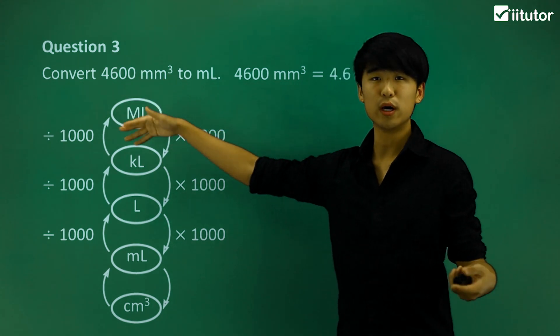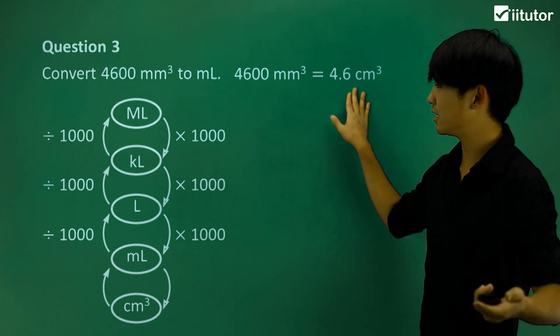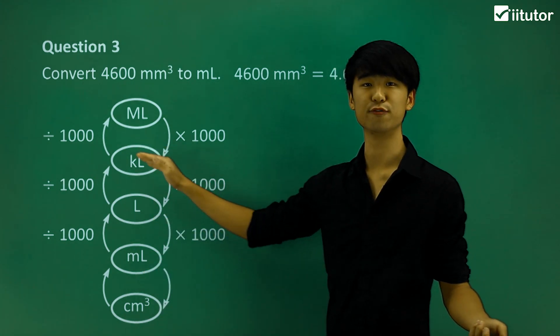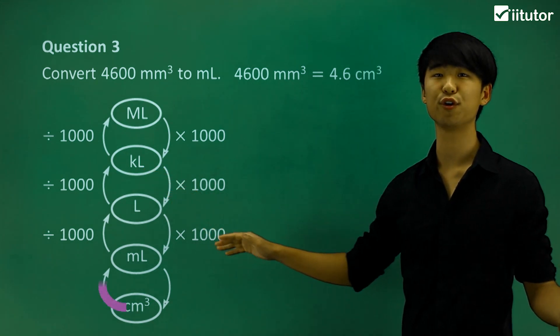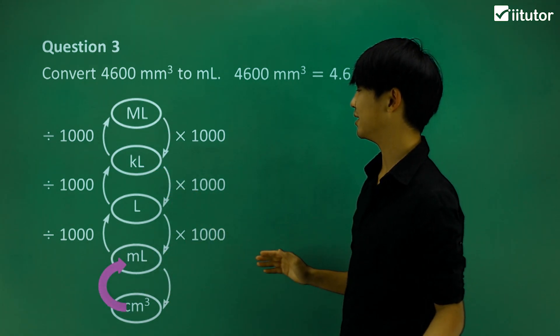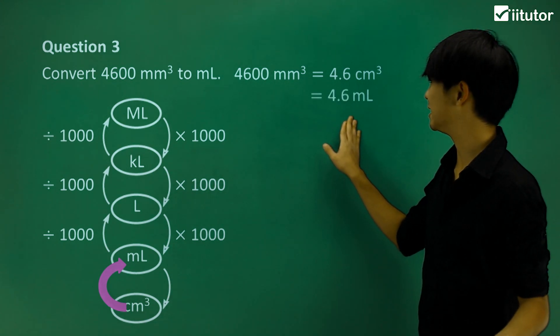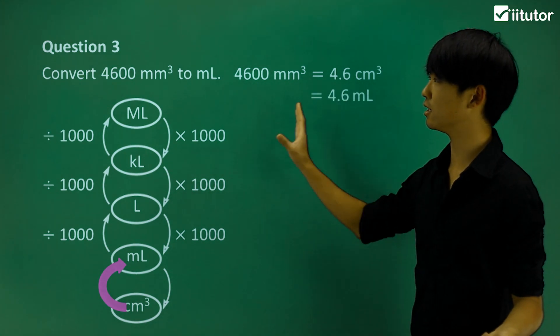So this, in other words, will have 4.6 centimeters cubed, which is really handy, because we can, from here, just use this little conversion that we have. So I'm going to look at centimeters cubed, and it's going to go up to milliliters. So this will just be simply 4.6 milliliters. So that was question number three.